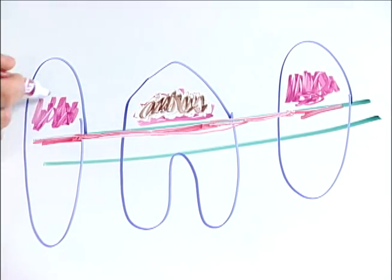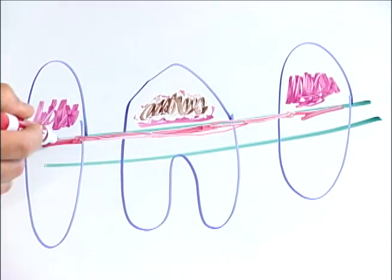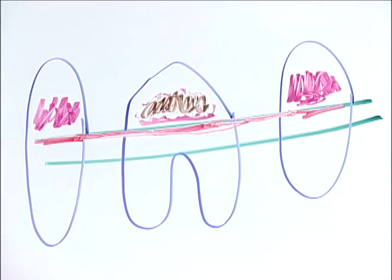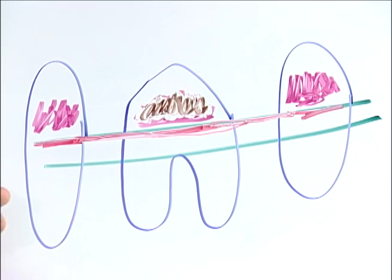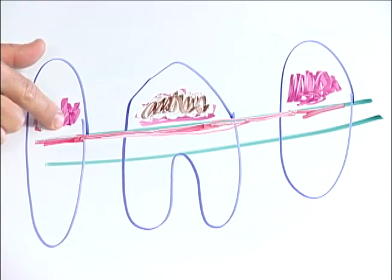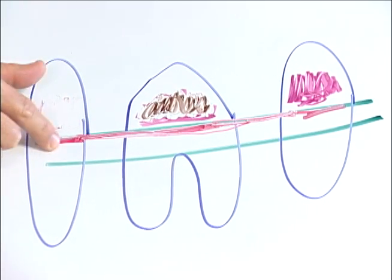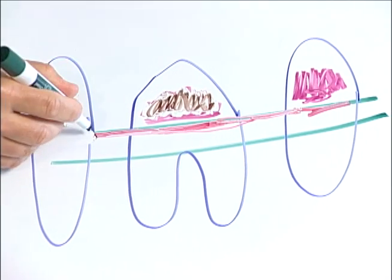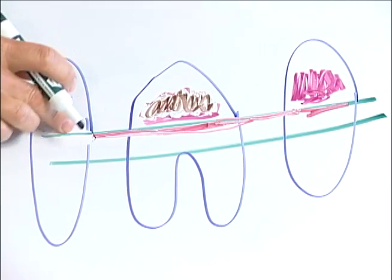This represents plaque, and this brown, calculus, and the redness is gingivitis. The key to periodontal therapy is plaque control. Plaque, if it's removed, will then remove the gingivitis, allowing a return to a healthy tooth.